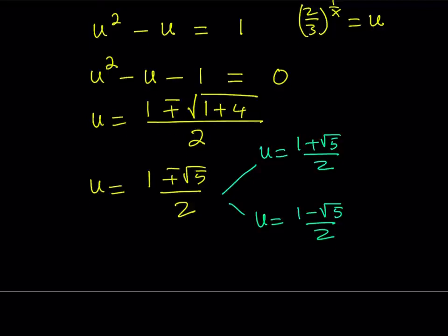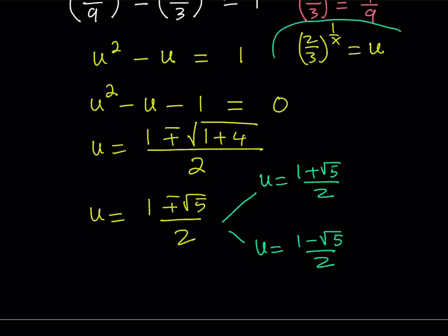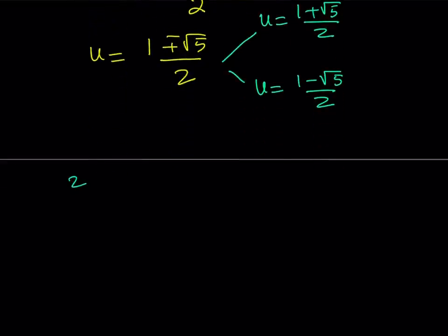All right. So, now what we're going to do is we're going to back substitute. So, what is u? u is equal to 2 thirds to the power 1 over x. So, let's go ahead and set them equal to each other. 2 thirds to the power 1 over x is equal to 1 plus root 5 over 2. Great. Now, we do have an exponential equation. But it's much simpler than what we started with, obviously. Because we have a single base. So, what are we going to do? We can take the logarithm of both sides.